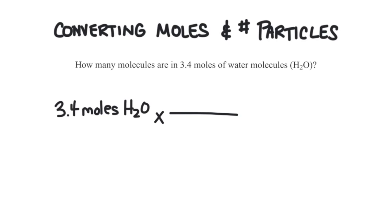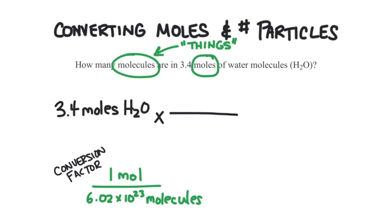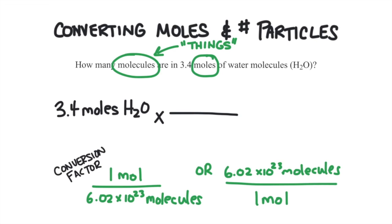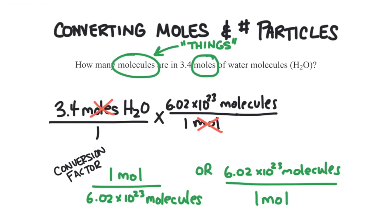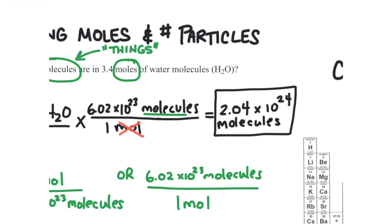There are two ways to write this particular conversion factor comparing moles to number of things. We can write the fraction as 1 mole per 6.02 times 10 to the 23 things, or 6.02 times 10 to the 23 things per 1 mole. The one we want will cancel the old unit and leave us with the new unit — the old unit must be on the opposite side of the fraction. Since 3.4 moles is on top, we use 6.02 times 10 to the 23 molecules per 1 mole, putting mole on the bottom so it cancels. We take 3.4 moles and multiply it by 6.02 times 10 to the 23 molecules, and we get an answer of 2.04 times 10 to the 24 molecules of water.